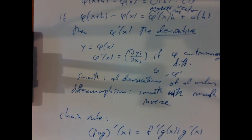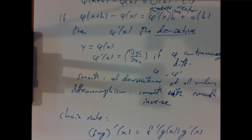I want to state three big theorems from several variable calculus: the inverse function theorem, the implicit function theorem, and the rank theorem. These might not have been covered in your several variable calculus class, but they are covered in all the standard textbooks. I won't prove them — they're important because they're useful for constructing examples of manifolds.